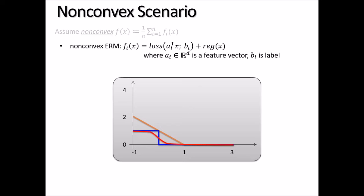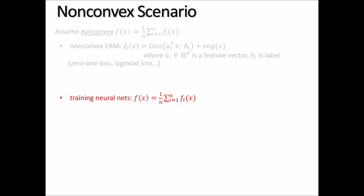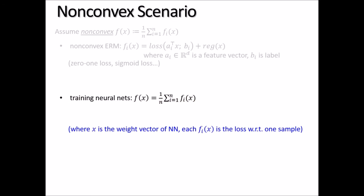Example two is training neural networks. Denoting the weight vector of the neural network by x, one can write the loss for one sample as fi(x). Training the neural network is then equivalent to minimizing the finite average of the fi's, which is again non-convex.